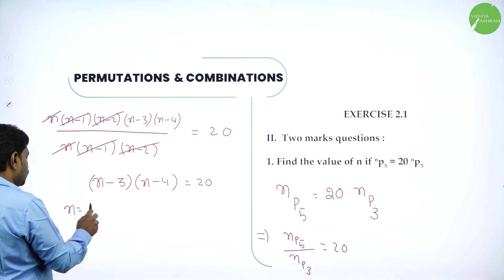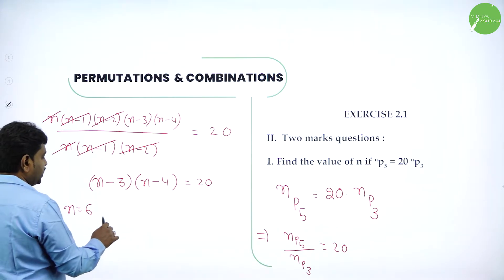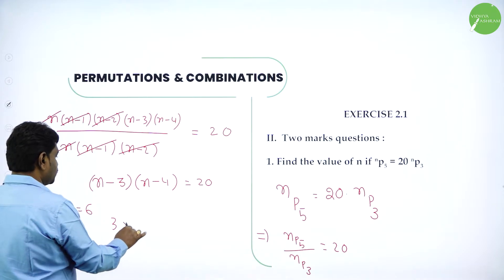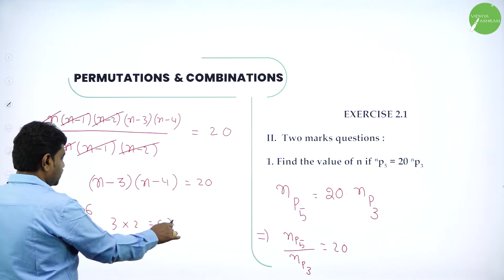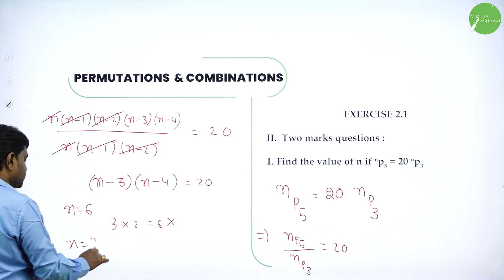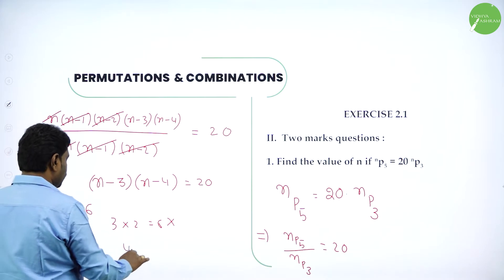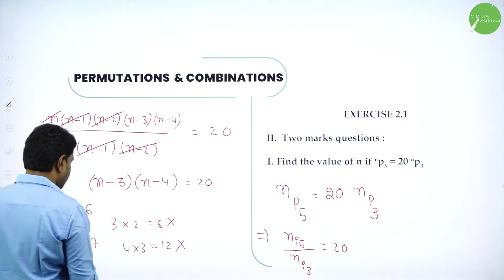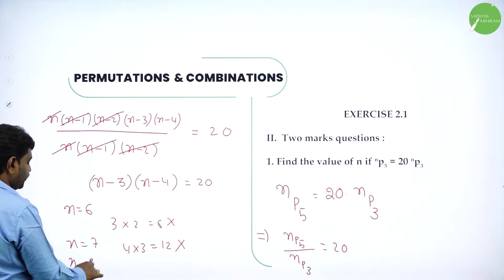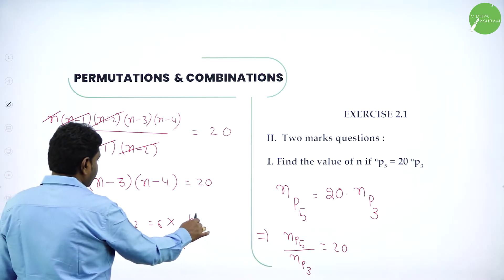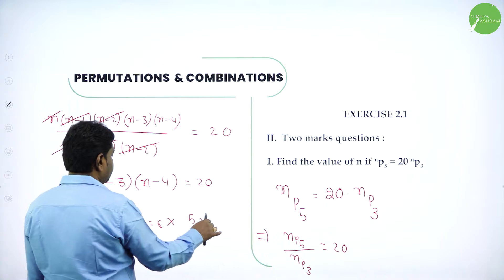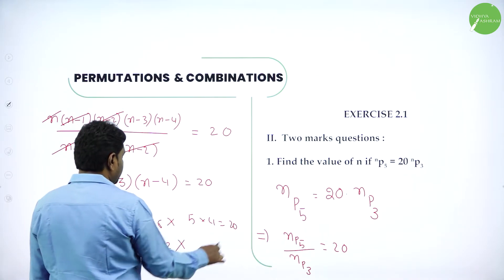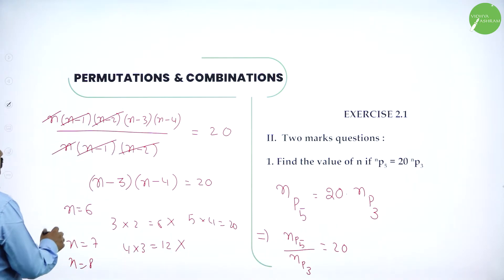By inspection: if N equals 6, then 6 minus 3 is 3 and 6 minus 4 is 2, giving 6 — does not match. Try N equals 7: 7 minus 3 is 4, 7 minus 4 is 3, giving 12 — also does not match. Try N equals 8: 8 minus 3 is 5, 8 minus 4 is 4. By inspection, N equals 8.